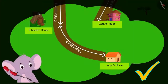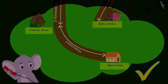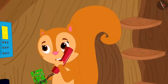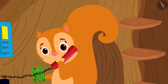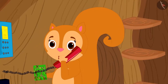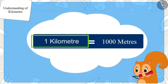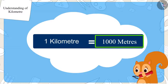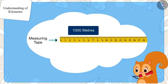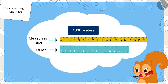Yes, Chanda, you have read the map correctly. Very good. Chanda then said to Appu, but if one kilometer is equal to 1,000 meters, then we will not be able to measure it with a measuring tape or a ruler. So how can we measure the distance between two places?